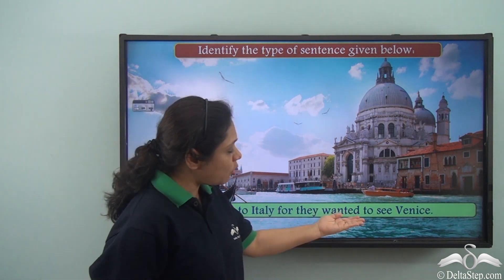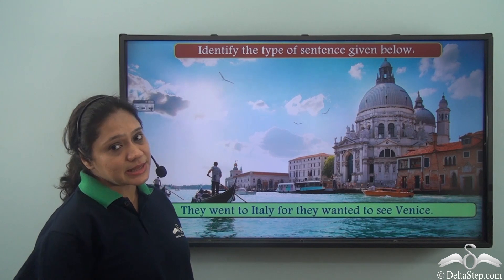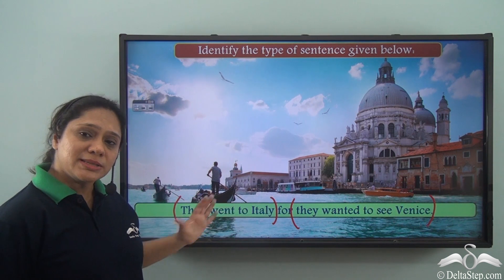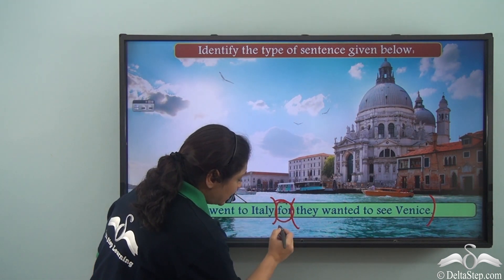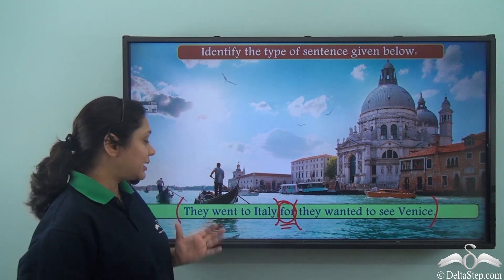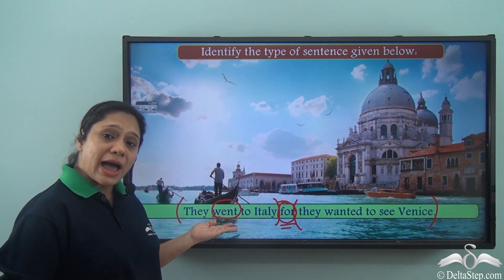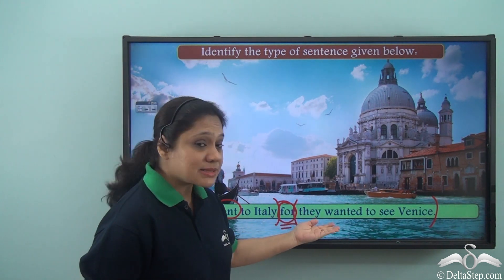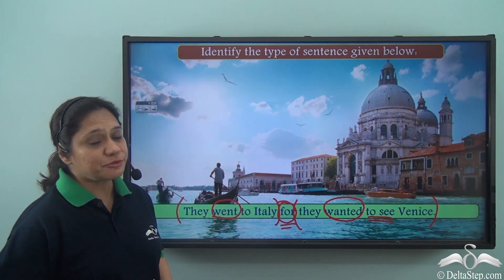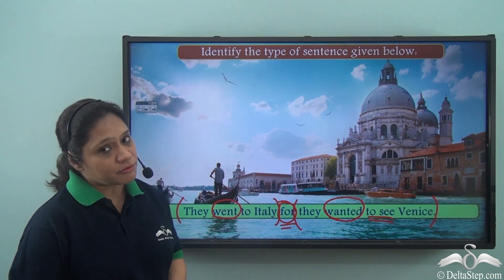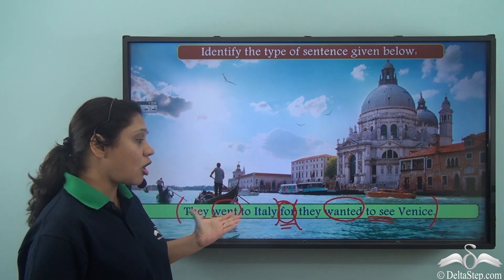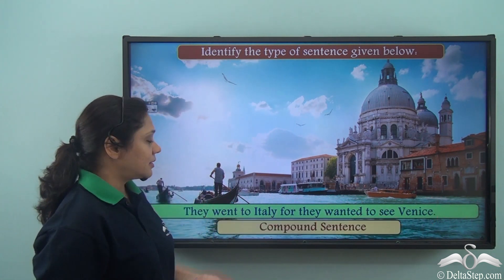'They went to Italy for they wanted to see Venice.' This sentence has two clauses — 'they went to Italy' and 'they wanted to see Venice' — both independent clauses joined by the coordinating conjunction 'for.' The finite verbs are 'went' and 'wanted.' Note that 'to see' is the infinitive form, not a finite verb. Since we have two independent clauses joined by a coordinating conjunction, this is a compound sentence.